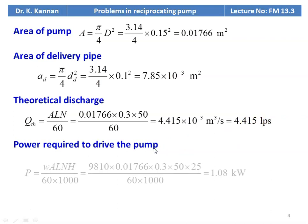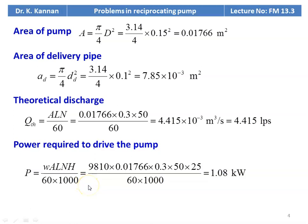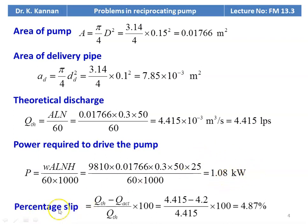Power required to drive the pump: P = W×A×L×N×H / (60 × 1000), where 60 converts RPM to per second and 1000 converts watts to kilowatts. Substituting: W = 9810, A = 0.01766, L = 0.3, N = 50 RPM, H = 25 m, gives P = 1.08 kW. Percentage of slip = (Q_theoretical − Q_actual) / Q_theoretical × 100 = (4.415 − 4.2) / 4.415 × 100 = 4.87%.